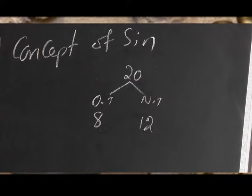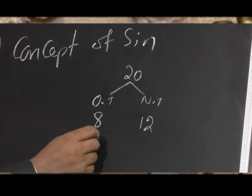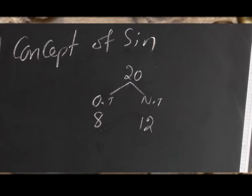As you know, the Bible is written in 3 different languages: Hebrew, Aramaic, and Greek. Now we come to the 8 different words used for the word sin in the Hebrew language, as I mentioned in the last episode.